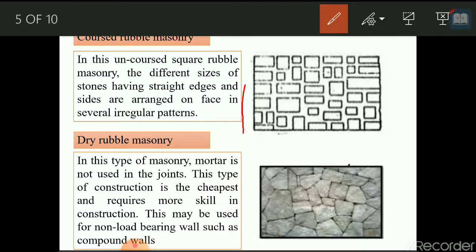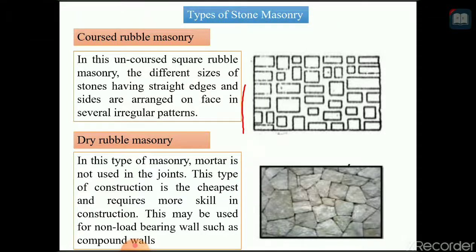The second type is uncoarse square rubble masonry. In this type, different sizes of stones having straight edges and sides are arranged on the face in several irregular patterns, unlike the previous type where regular patterns were used.